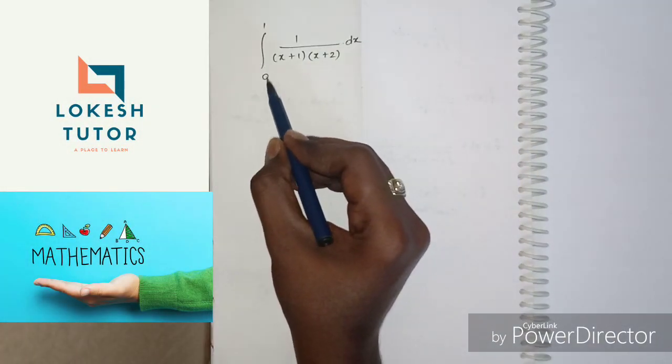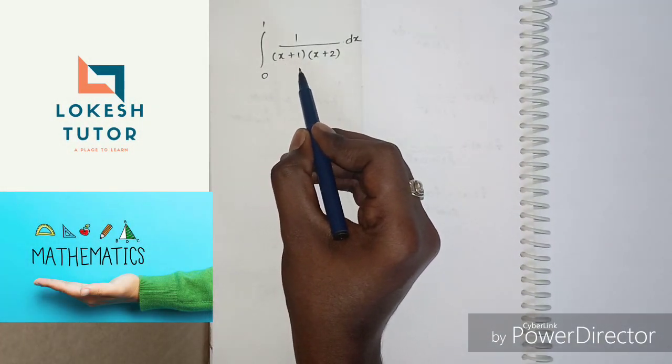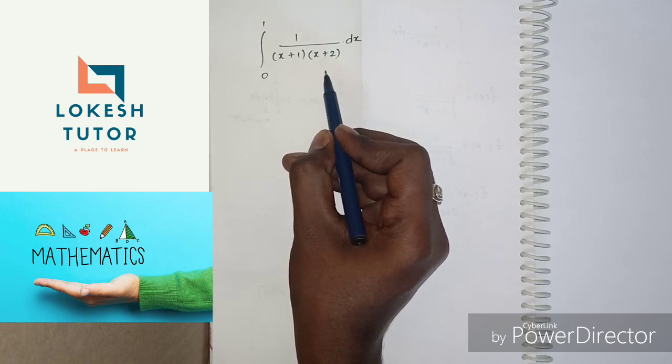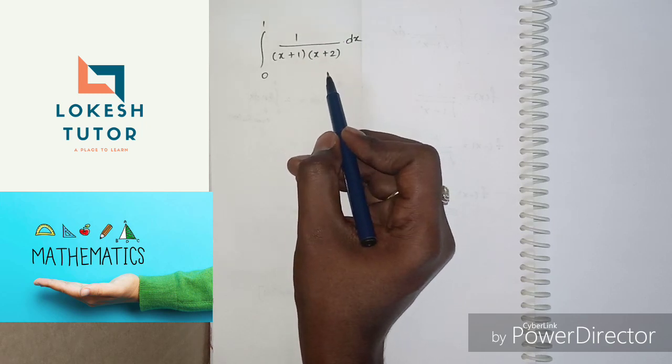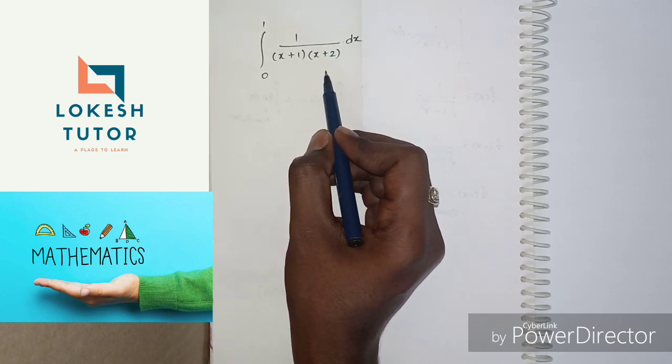Integral 0 to 1, 1 by (x plus 1) into 1 by (x plus 2). We are going to use partial fractions.